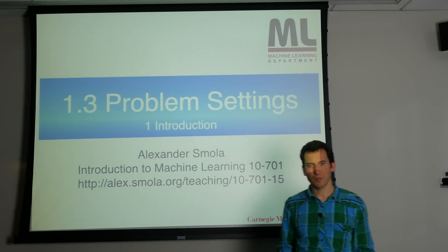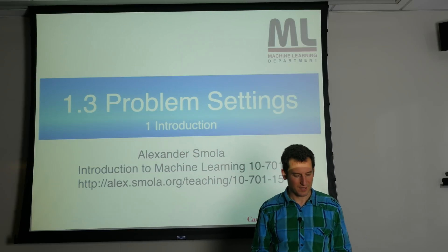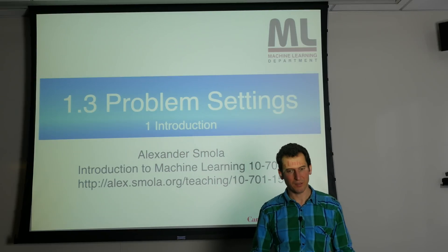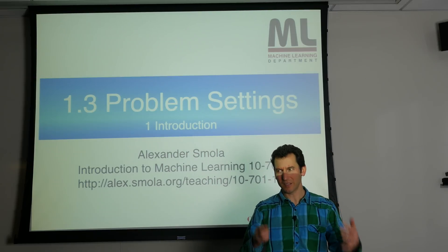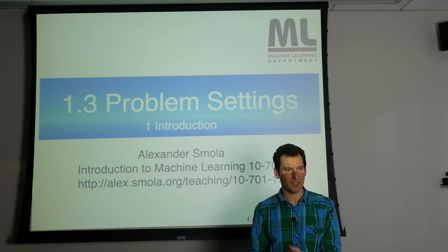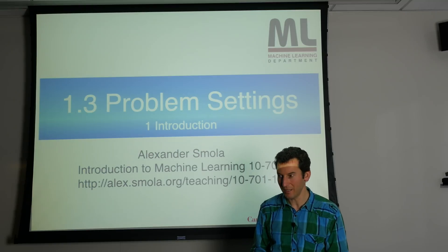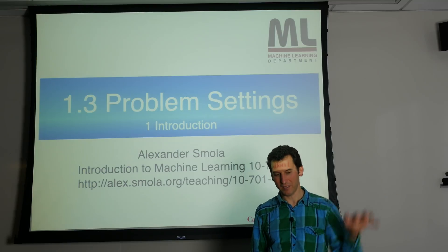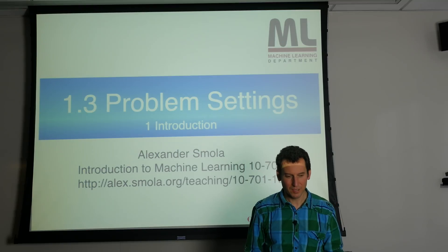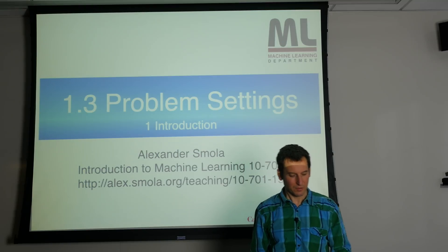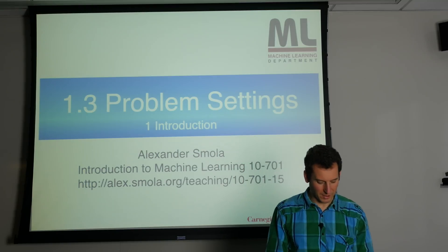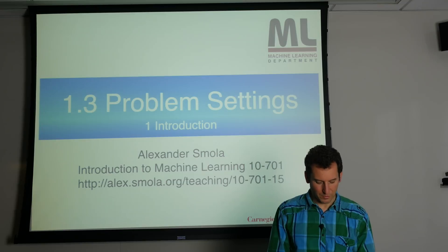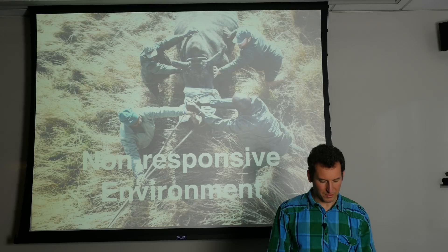Now let's look at machine learning problems as they can actually arise, basically the context in which this can arise. We first looked at what you can actually do and now we are looking at where those problems arise.